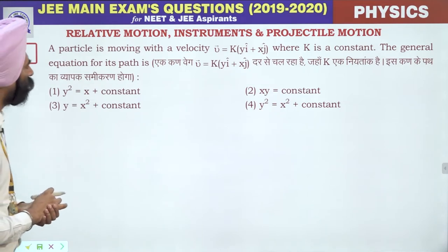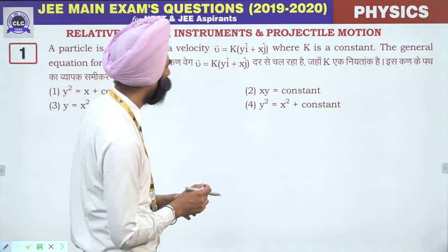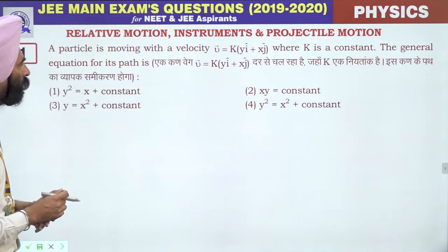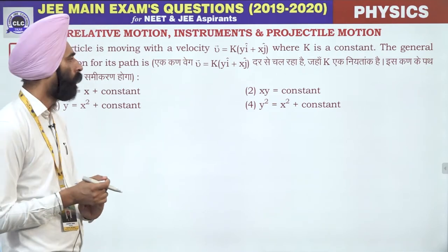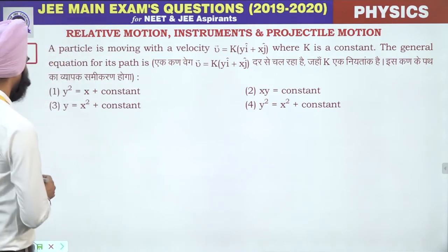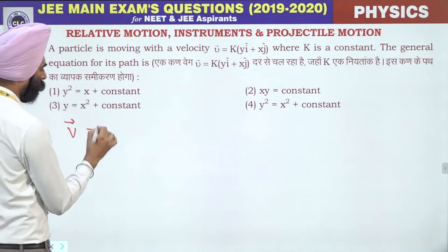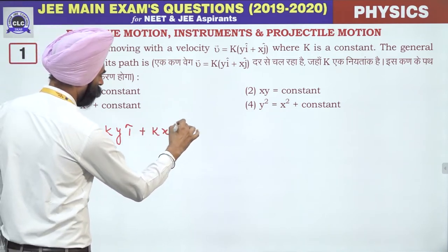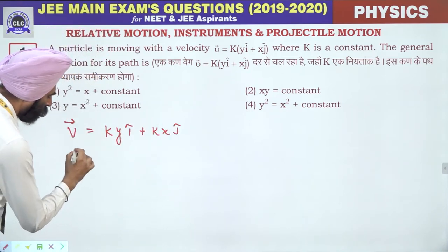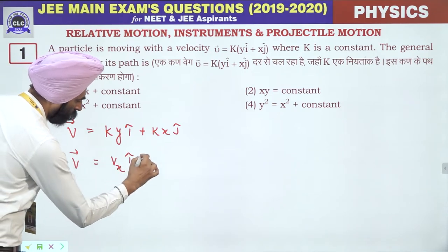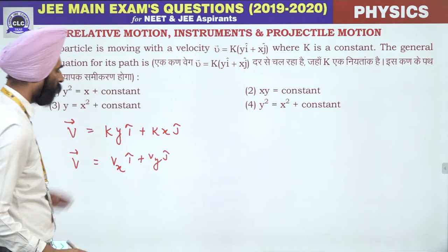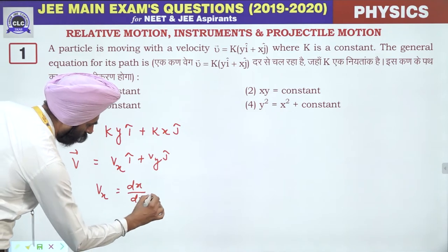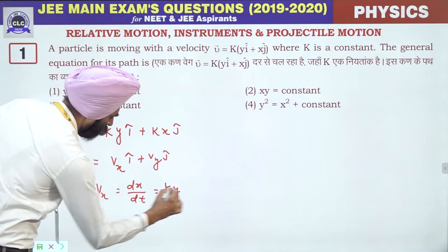First question: a particle is moving with velocity v-vector equal to ky·î + kx·ĵ, where k is a constant. The general equation for its path is required — we need to find the relation between x and y. We write v-vector equal to ky·î + kx·ĵ, so vx = dx/dt = ky and vy = dy/dt = kx.